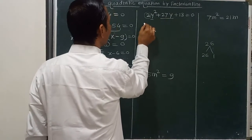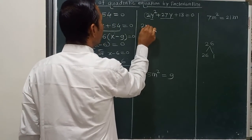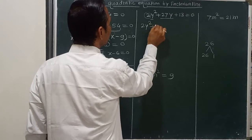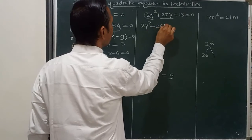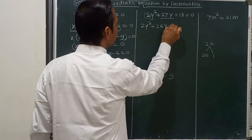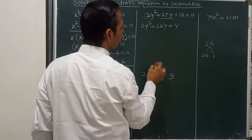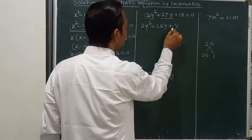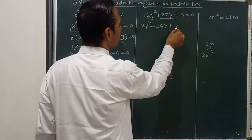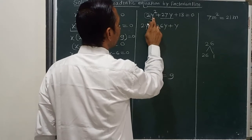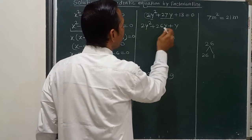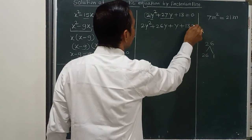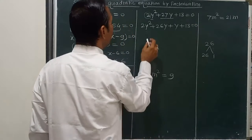Splitting the middle term, we get 2y squared plus 26y plus y plus 13 equals 0.